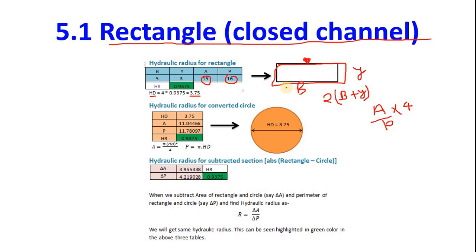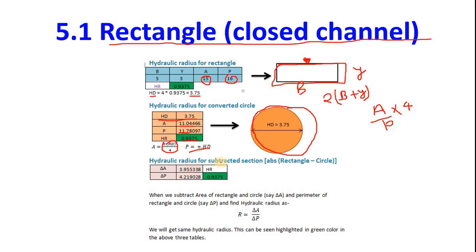Now draw a circle with diameter 3.75 (the hydraulic diameter). Find the area of the circle: A = pi·d²/4, where d is the hydraulic diameter. The perimeter is pi·d. Find hydraulic radius A/P for this circle — you will get the same value: 0.9375. This confirms the conversion works.